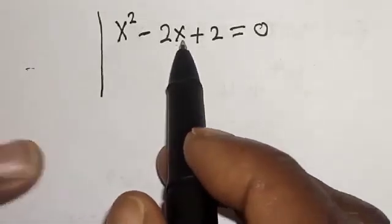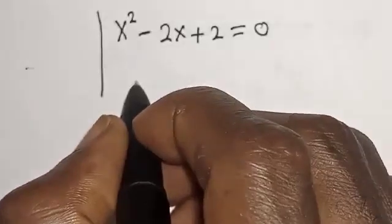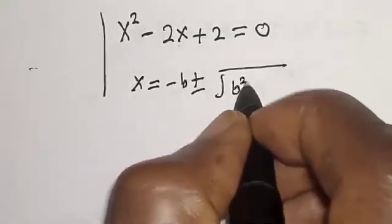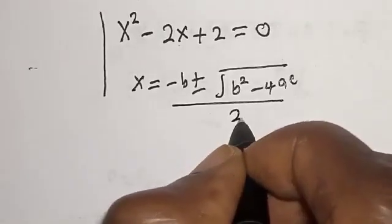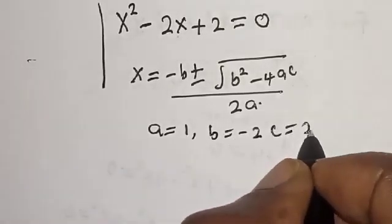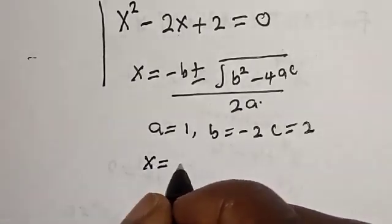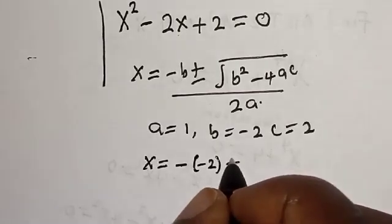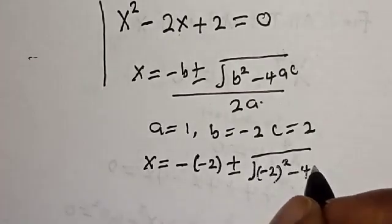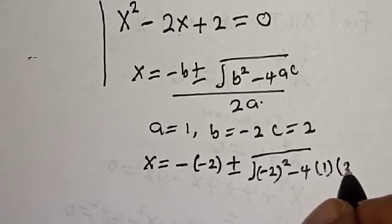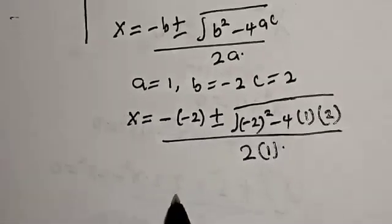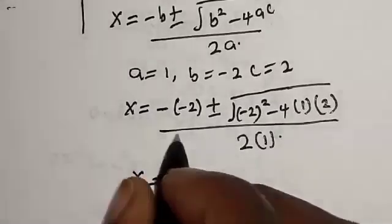That is our final answer for the first case. For the second case, x squared minus 2x plus 2 equals 0. This can be solved using the quadratic general formula: x is equal to minus b plus or minus square root of b squared minus 4ac over 2a. Here a is equal to 1, b is equal to minus 2, and c is equal to 2.